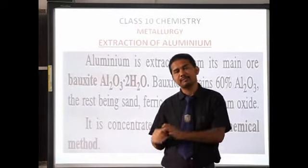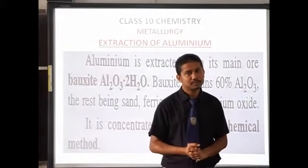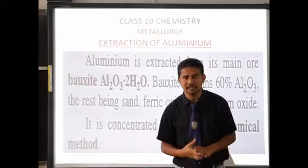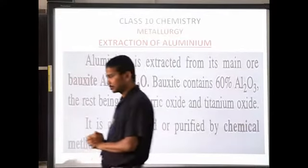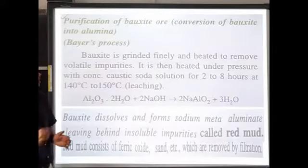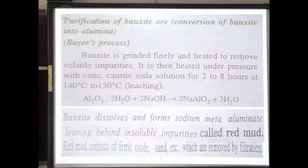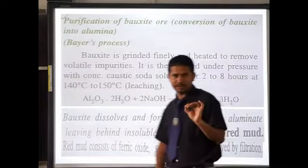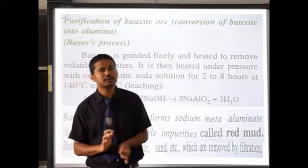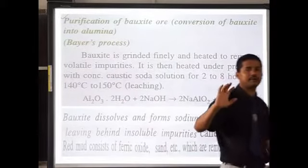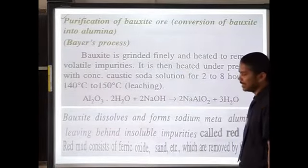For purification of bauxite, Bayer has given the Bayer's process. Our intention is to get pure aluminium. For getting pure aluminium, we have to undergo five steps. Number one is crushing and grinding — bauxite is ground finely.